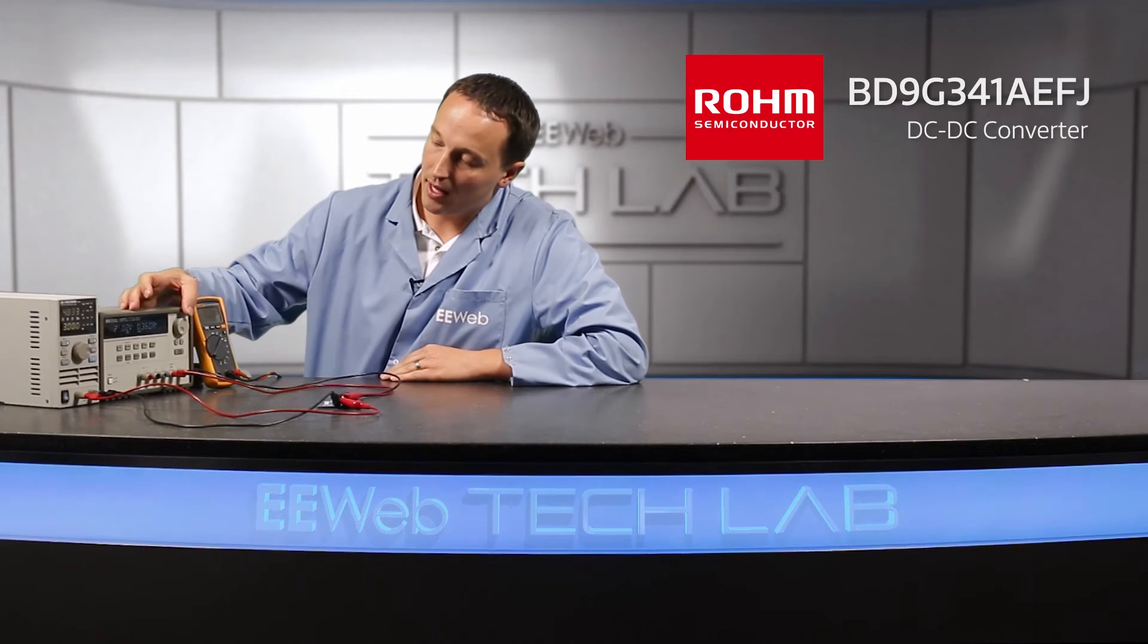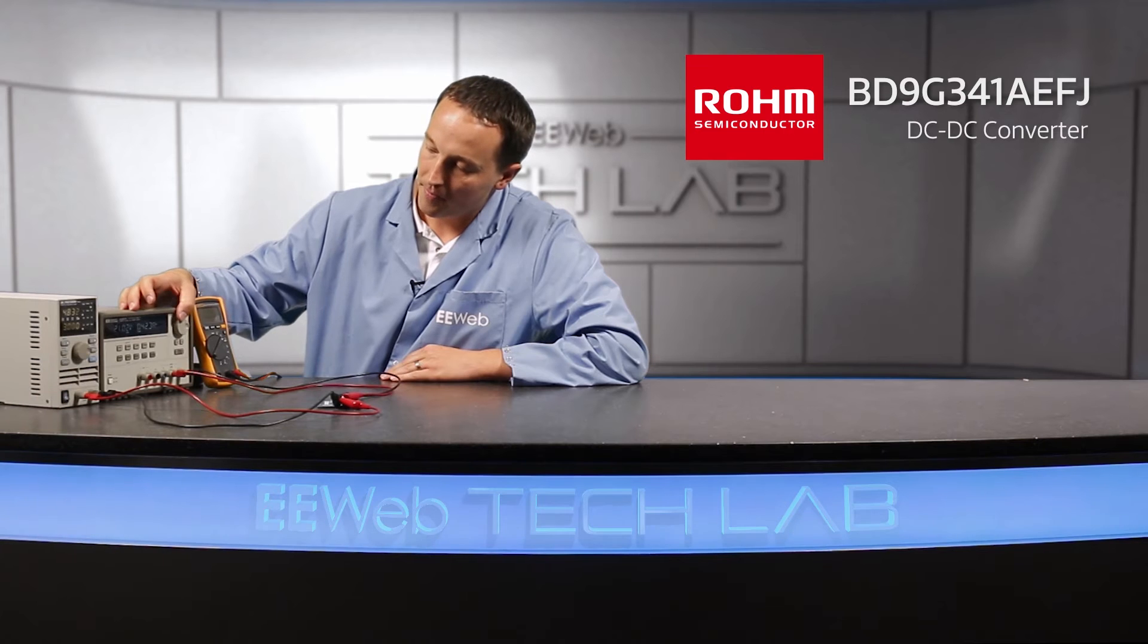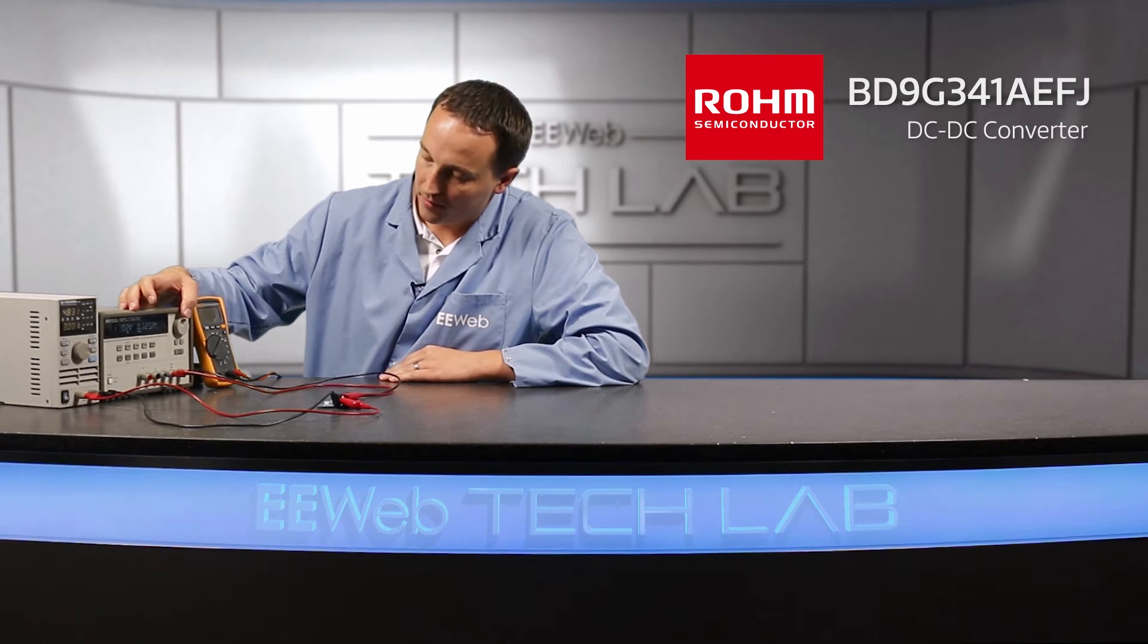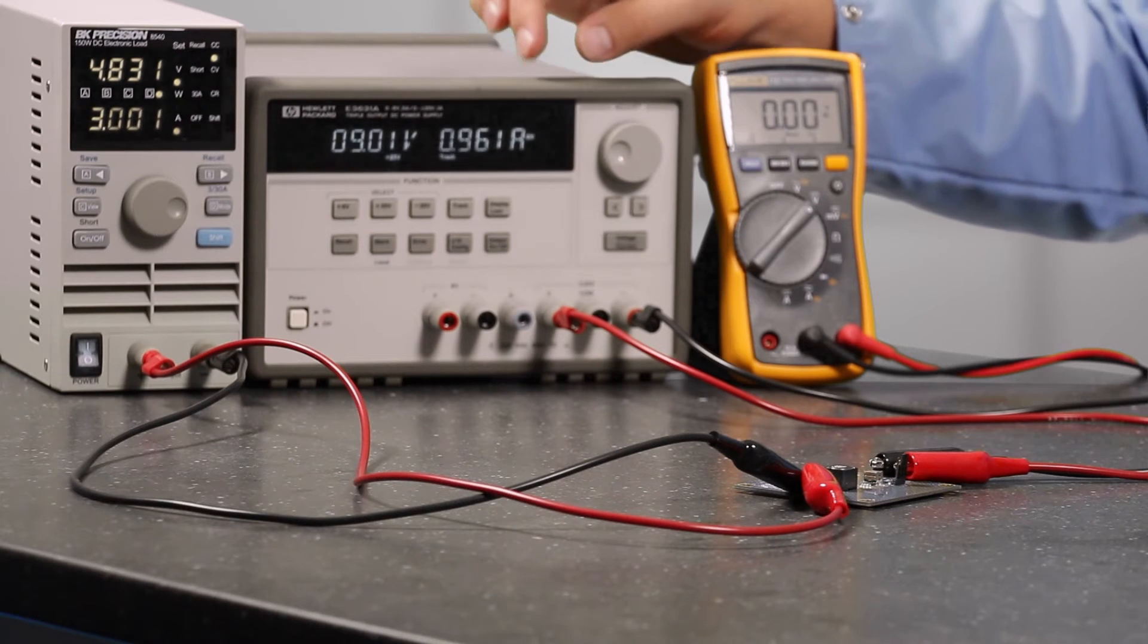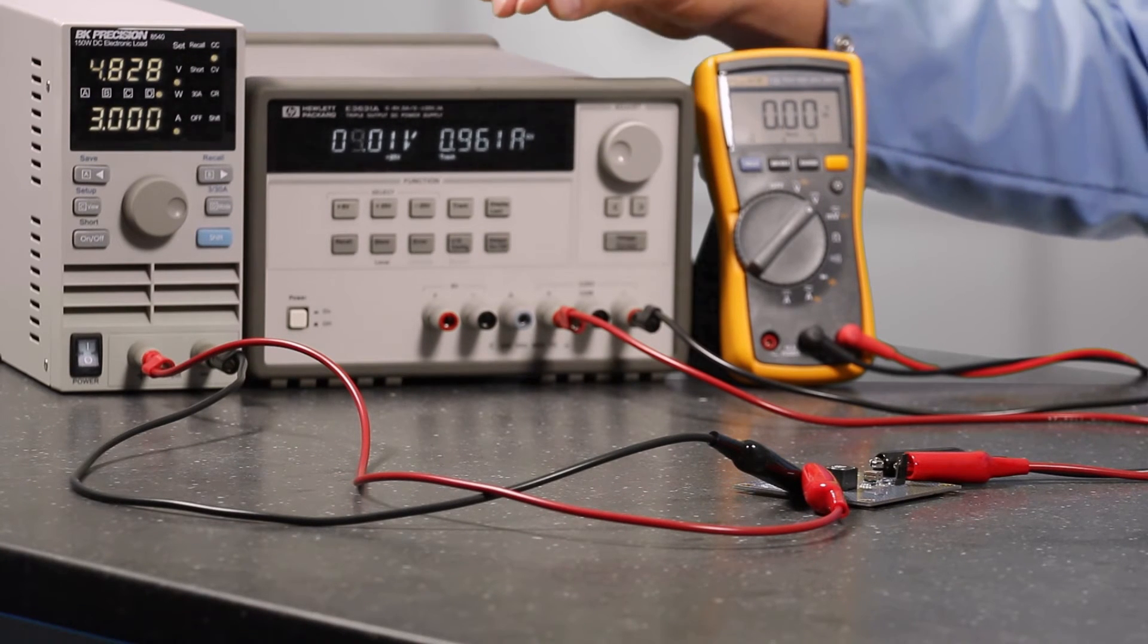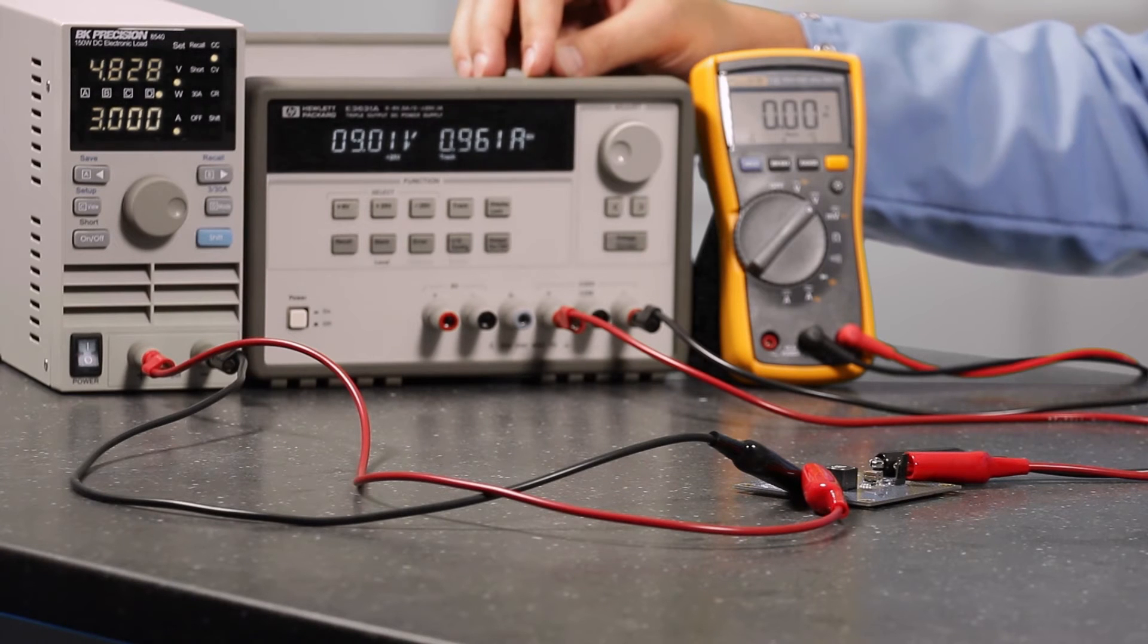Now if I ramp my supply voltage down—and remember, it's twice what it shows here—as we get down to about 9 volts and step down again, it's going to hit the output limit of the supply, so it'll start switching between constant current and constant voltage modes.